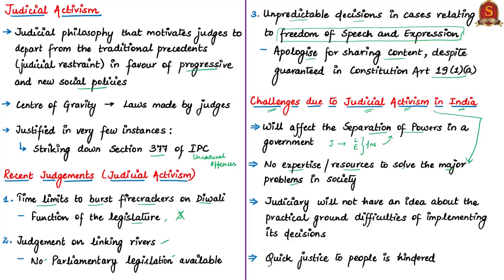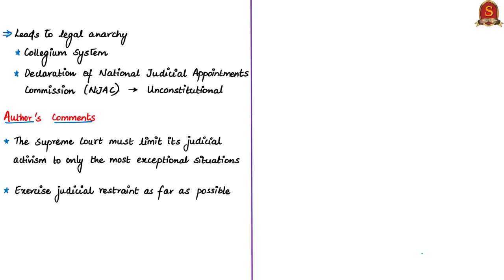The judiciary will not have an idea about the practical ground difficulties in implementing its orders. This will again burden the executive's work. The authors have quoted this issue in the last paragraph of the editorial, stating that it is not the function of a judge to do the administrator's activities, because the judiciary does not have the expertise in any such jobs. Also, when the judiciary is involved in judicial activism, its original duty to ensure justice to the people is hindered. Finally, judicial activism will lead to legal anarchy.